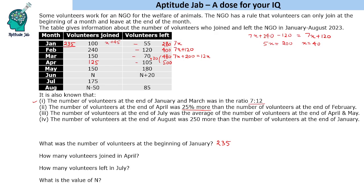For May, there is a decrease of 30: 150 join and 80 leave, making it 470. For June, N people join and N + 20 leave, so they reduce the number by 20, bringing it to 450.